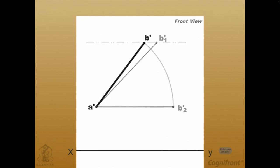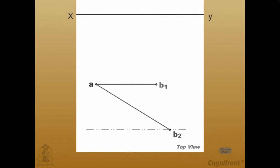Now, similarly, with A as center and AB1, draw an arc cutting the locus line B-2 at B.